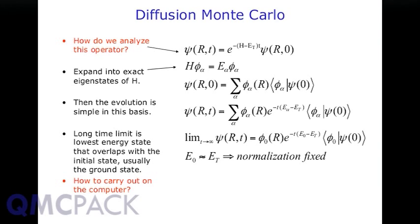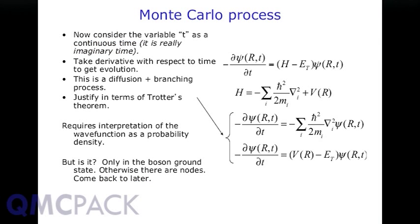Now we want to relate this to a Markov process. Taking the time derivative of the projection equation and pulling down an H, we get the imaginary time Bloch equation — like the time-dependent Schrödinger equation but without the i. This is where Fermi started, realizing there was an analogy to a master equation in a stochastic process.